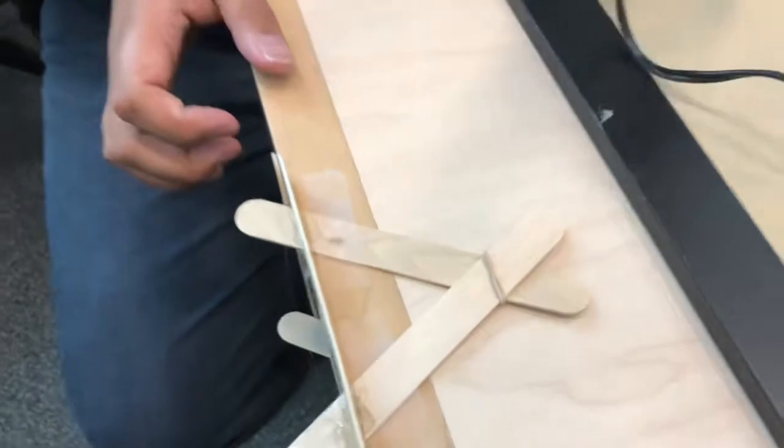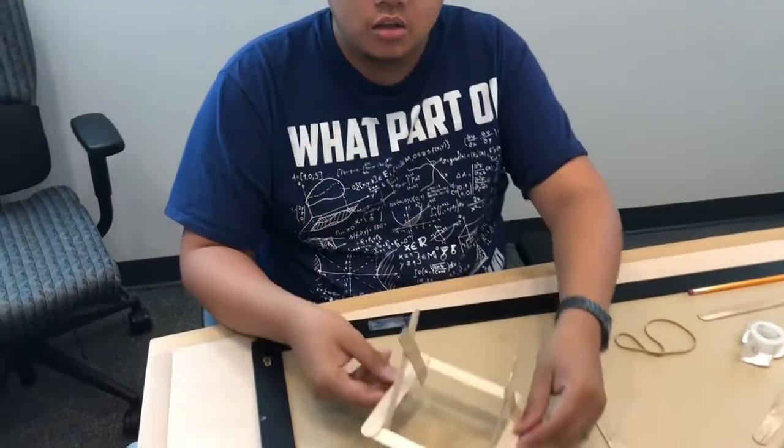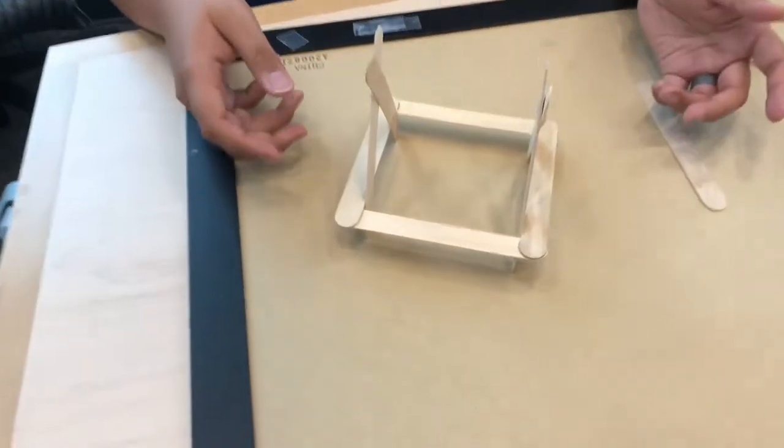Then we just let it dry and we should be good to go. So once we have both the A-frames hot glued on, because we scored it, we made sure that it's nice and balanced.